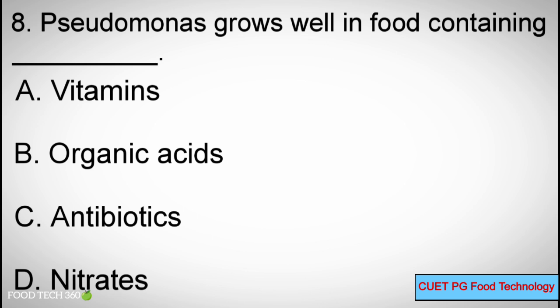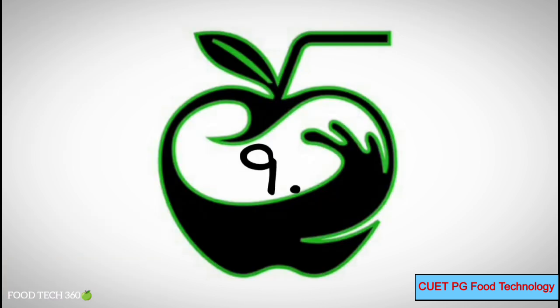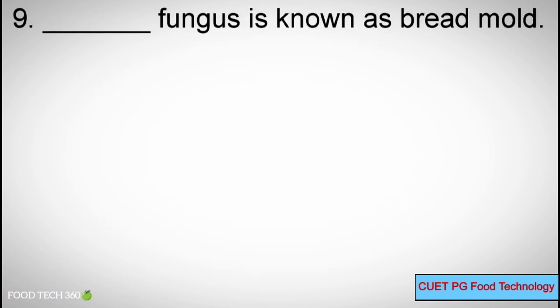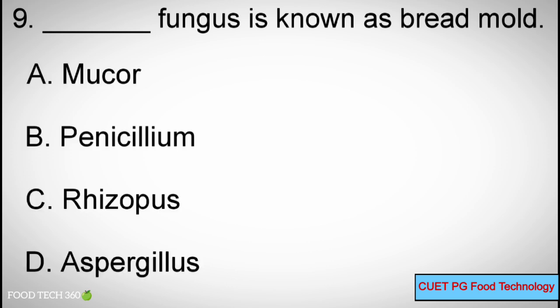Question number 9: Which fungus is known as bread mold? Options: A) Mucor, B) Penicillium, C) Rhizopus, D) Aspergillus. Correct answer: C) Rhizopus.